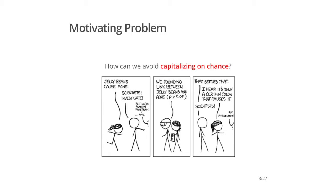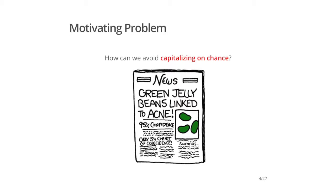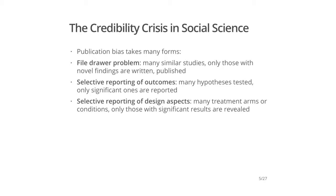Our motivating question is: how can we avoid capitalizing on chance? In other words, how can we make sure that we aren't just selecting the green jelly beans? We've already talked quite a bit about the credibility crisis in social science. The classic form of publication bias is the file drawer problem, where many similar studies are conducted but only those with novel findings end up in print. But there are, of course, other forms of publication bias.